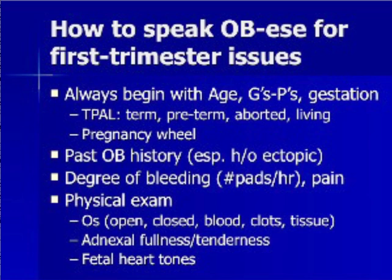Always use a pregnancy wheel after determining the first day of the last menstrual period to establish the exact fetal age. This is extremely important early in pregnancy, as differences in days can be clinically important. In patients with first trimester issues, past obstetric history of ectopic pregnancy or in vitro fertilization is extremely important. Additionally, patients with vaginal bleeding should be queried as to the extent of bleeding in terms of number of sanitary pads soaked per hour.